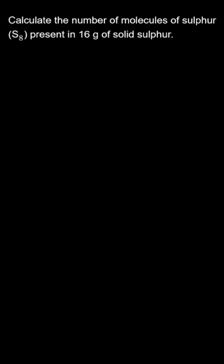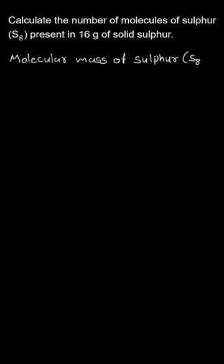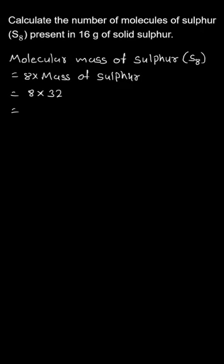First of all, let us calculate the molar mass of the sulfur molecule. As we know, there are 8 atoms of sulfur present in one molecule of sulfur, and one atom of sulfur has 32 grams molar mass. So the total molar mass of the sulfur molecule will be 8 × 32, that is 256 grams.